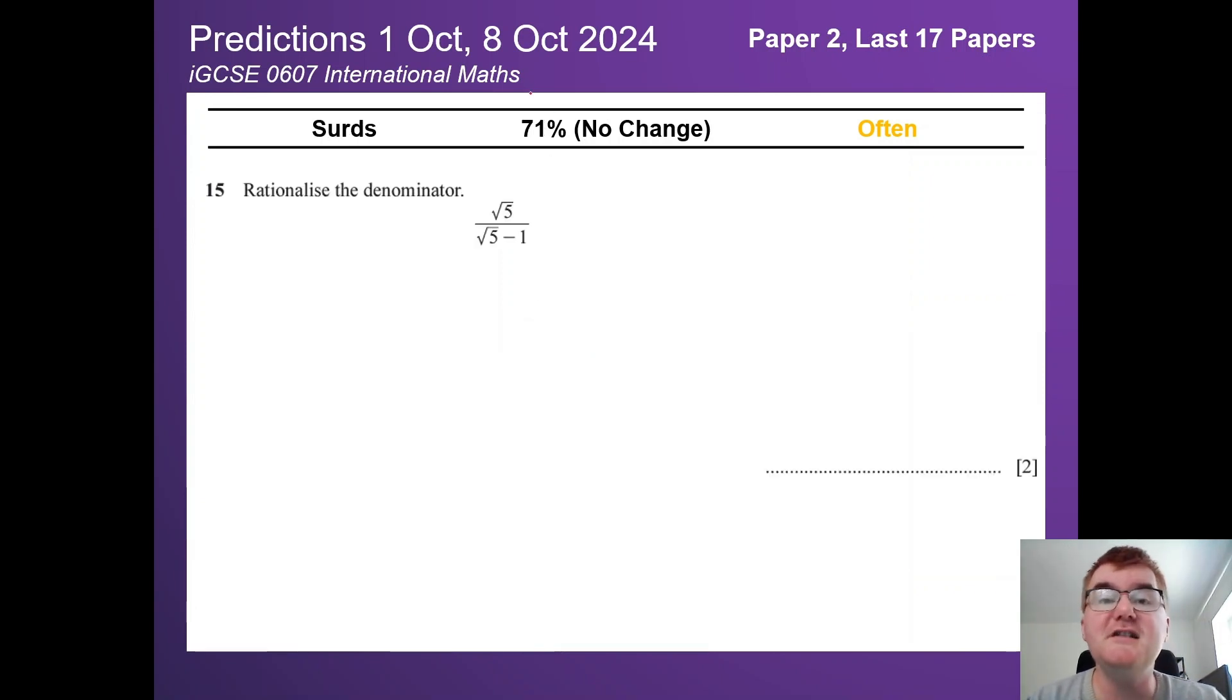On to surds, 71% no change. Perhaps this will be bigger in 2025 with the non-calculator paper. This is a very typical question: rationalizing the denominator. Remember, with this kind of denominator we need to multiply by its conjugate. So we multiply by root 5 plus 1, top and bottom, to get our rationalization. Only two marks here, but it can be three or even four marks for this kind of question.